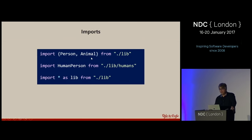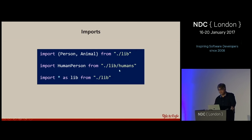You can import named exports like 'import person and animal from lib', specifying a relative path. If you use dot-slash, the module bundler searches for a lib.js or lib.ts file. You can grab a default export by importing from a path like slash lib slash human. And with the star syntax, you can import everything a library exports and attach it to an object — so lib.person and lib.animal are all available, almost like a namespace.